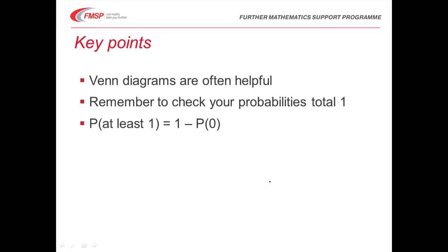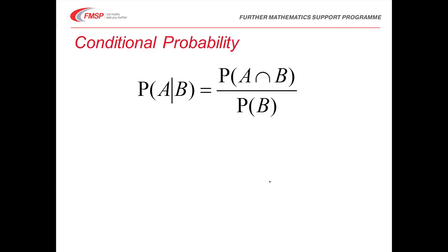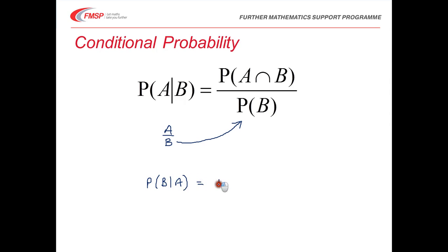There's the conditional probability formula. If you struggle to remember which way round it goes, think of P(A given B) as the fraction it looks a little bit like — that tells you that it's the probability of B you need in the denominator and not the probability of A. The alternative version, probability of B given A, would therefore be the same numerator, the probability of A and B, over the probability of A.